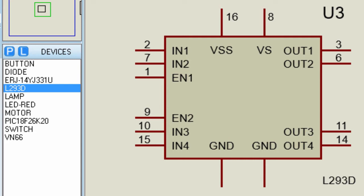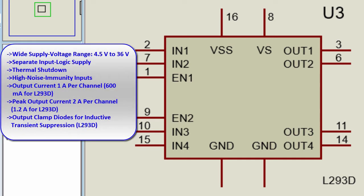Both these devices are designed to drive inductive loads such as relays, solenoids, DC and bipolar stepping motors, as well as other high current, high voltage loads in positive supply applications. Some of the features include wide supply voltage range from 4.5 to 36 volts, separate input logic supply, thermal shutdown, high noise immunity, input/output current of 1 amp per channel or 600 milliamps per channel for the L293D, peak output current of 2 amps per channel for the L293 or 1.2 amps for the L293D, and output clamp diodes for inductive transient suppression.